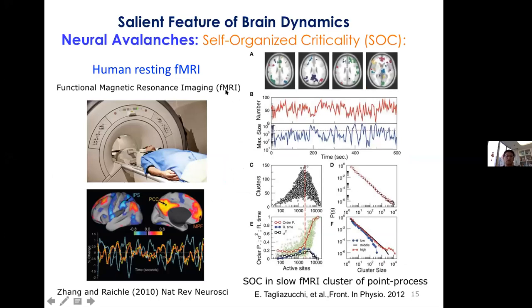At the whole-brain level, we can measure human brain activity from functional fMRI — an indirect measure of blood oxygen concentration related to firing rate. This activity is irregular, and performing avalanche analysis again shows activity spreading in cluster form. The cluster size has a power law distribution, and other measures confirm the signature of the whole brain working at a critical state.